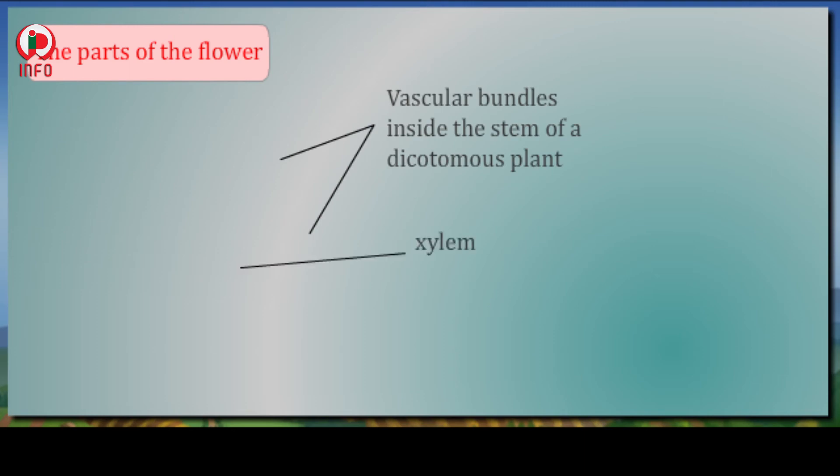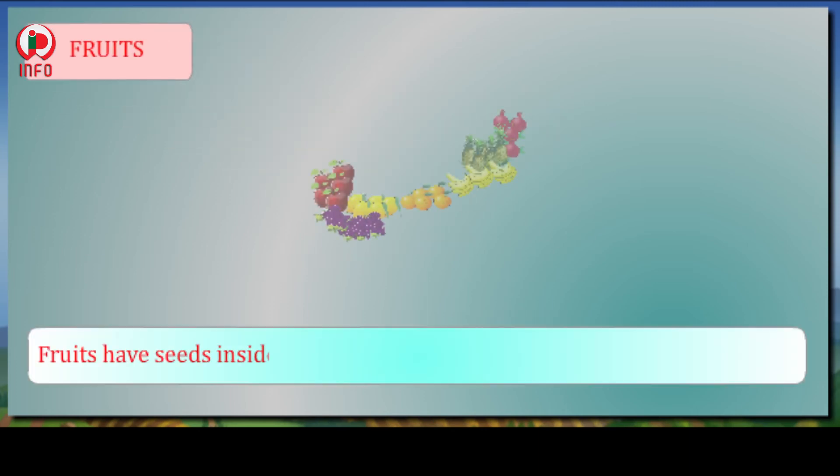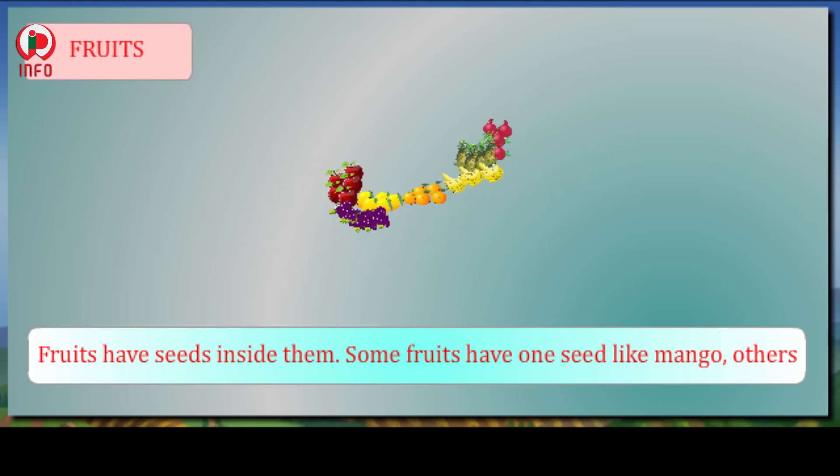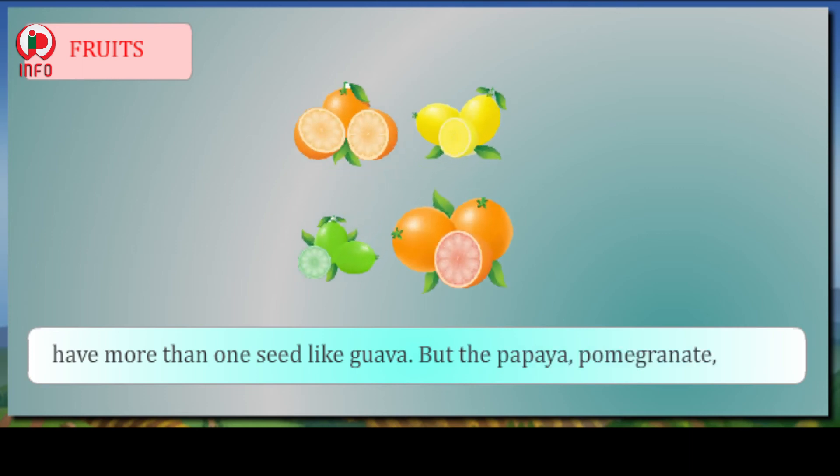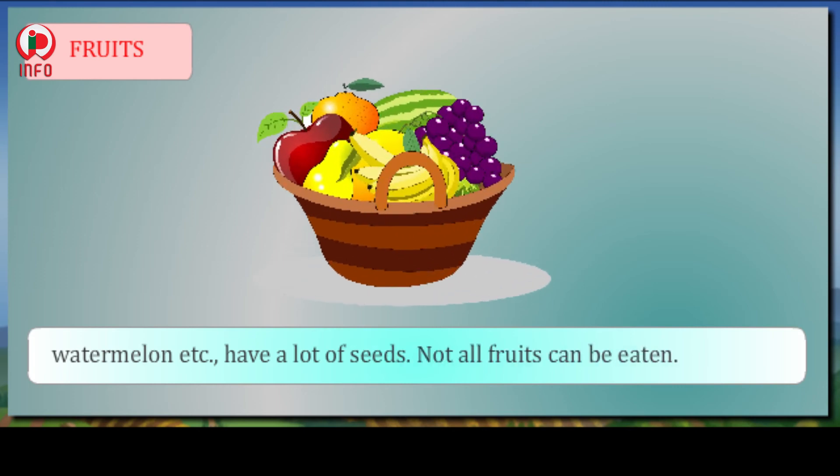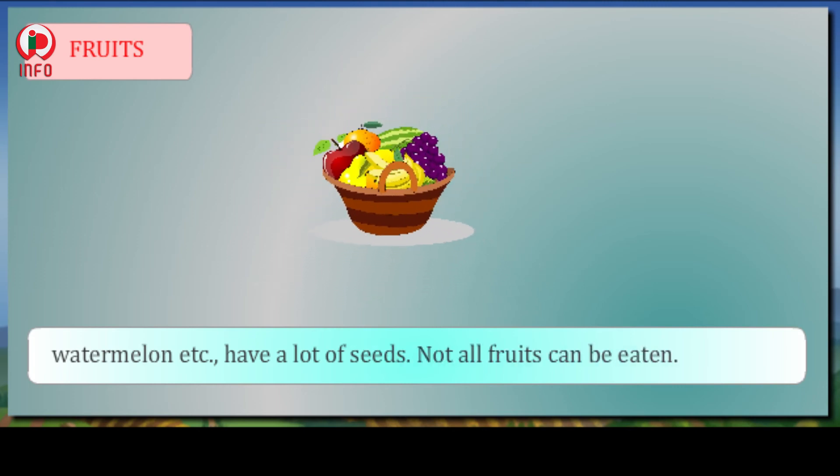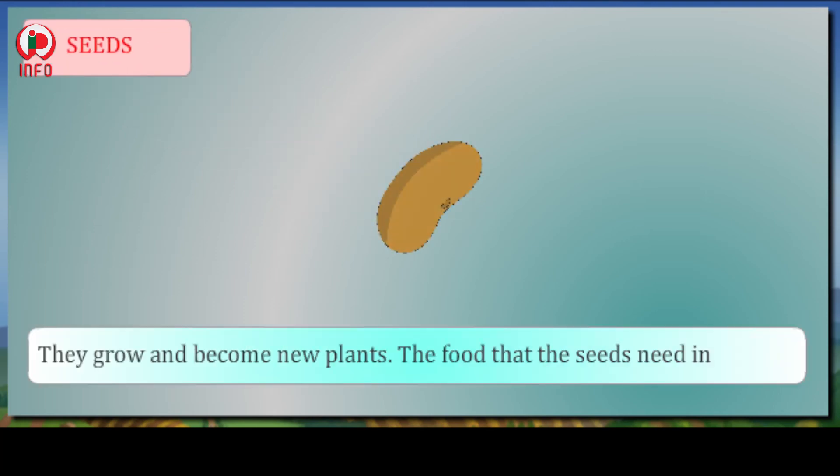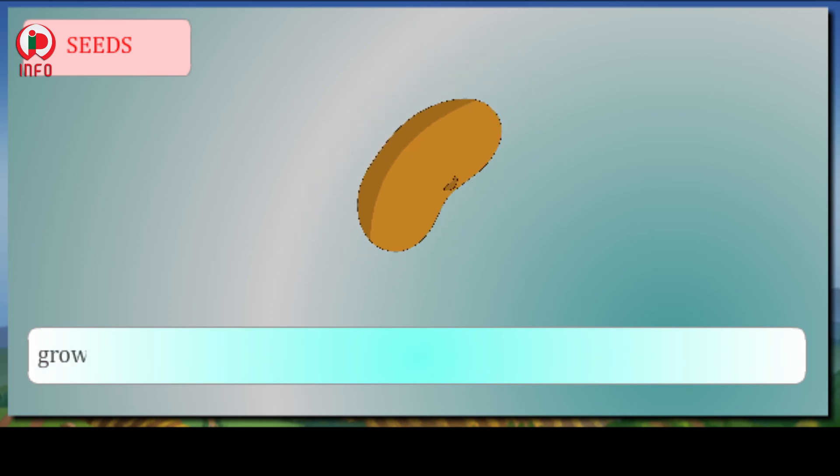Fruits: Fruits have seeds inside them. Some fruits have one seed like mango; others have more than one seed like guava. But papaya, pomegranate, watermelon, etc., have a lot of seeds. Not all fruits can be eaten. Seeds grow and become new plants. The food that the seeds need in order to grow is in a part called the cotyledon.